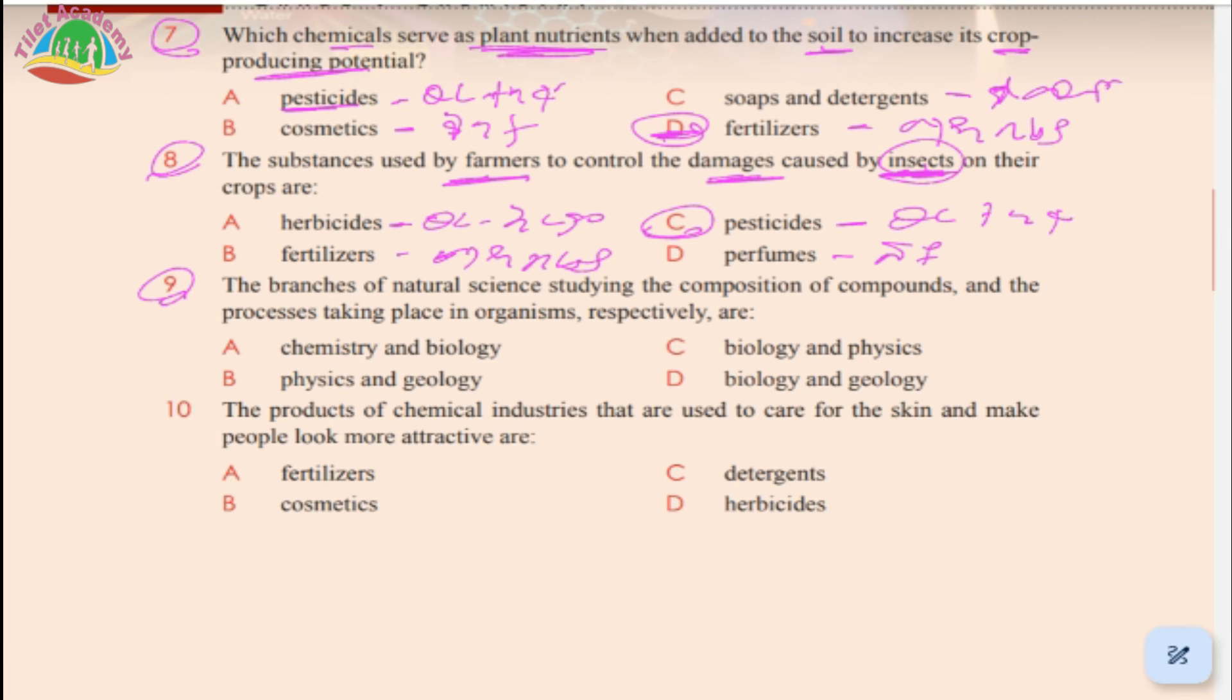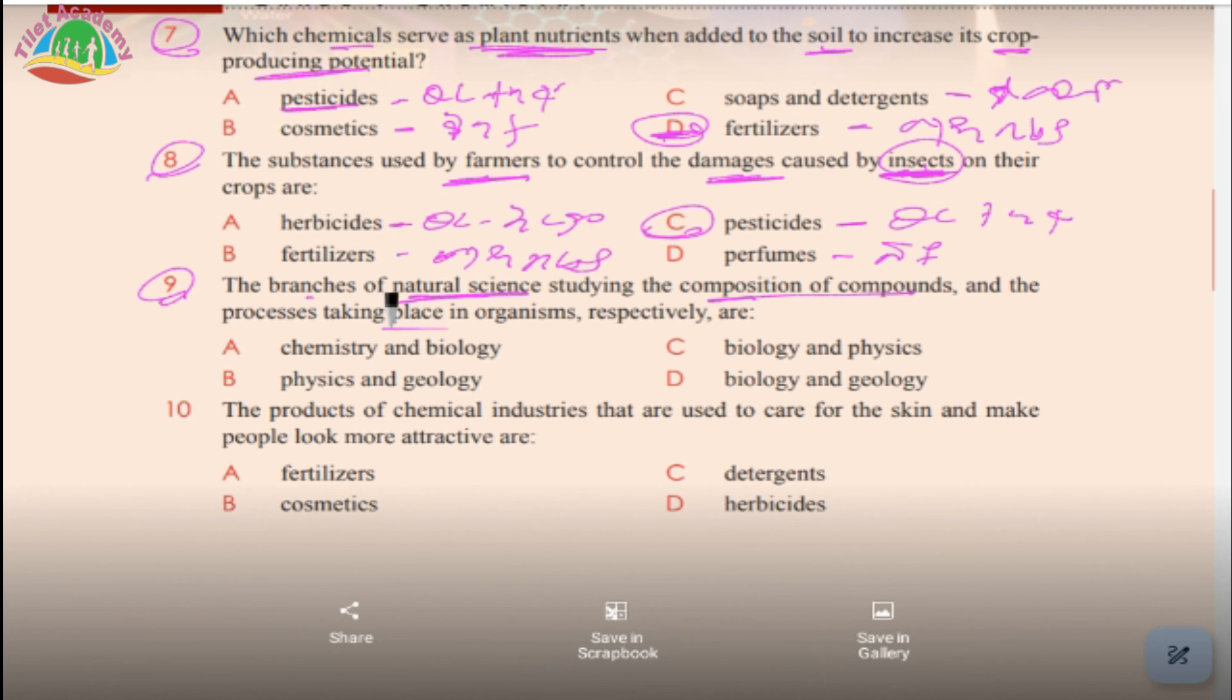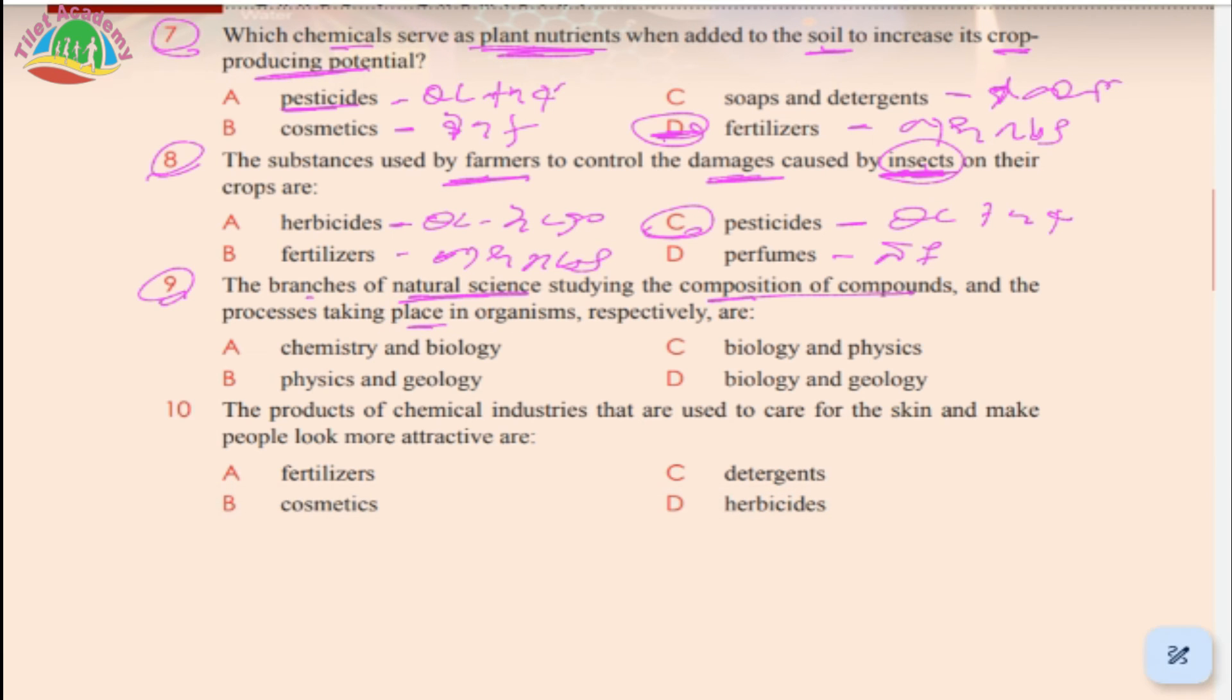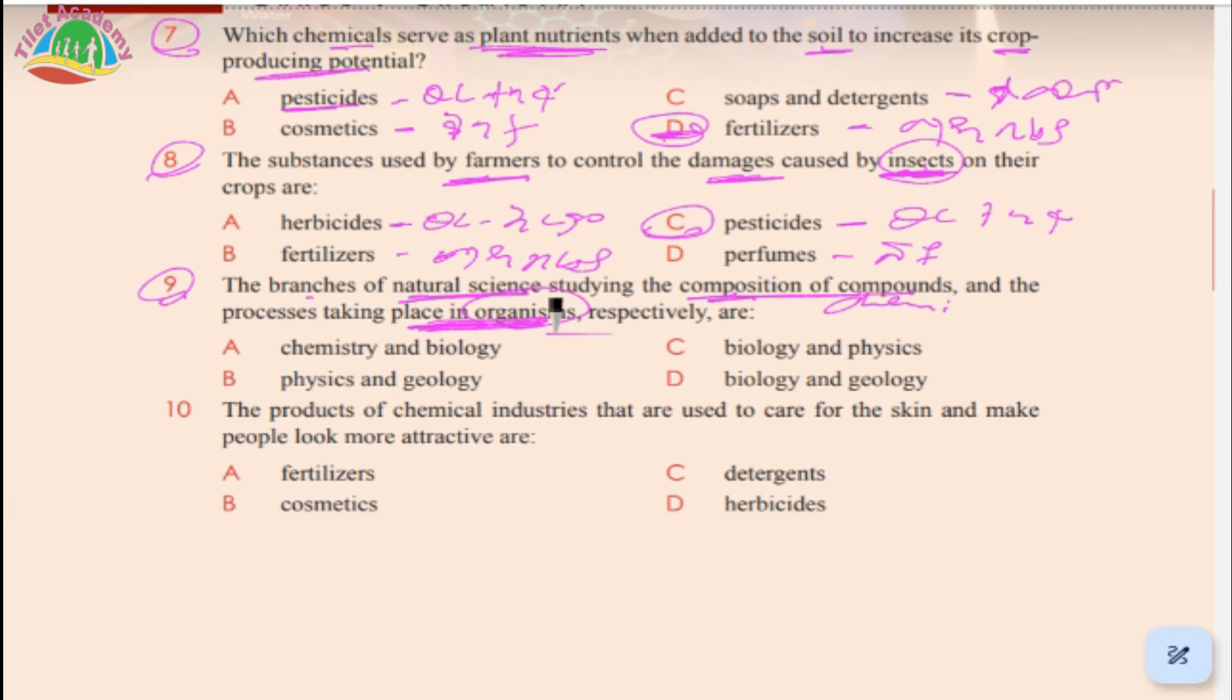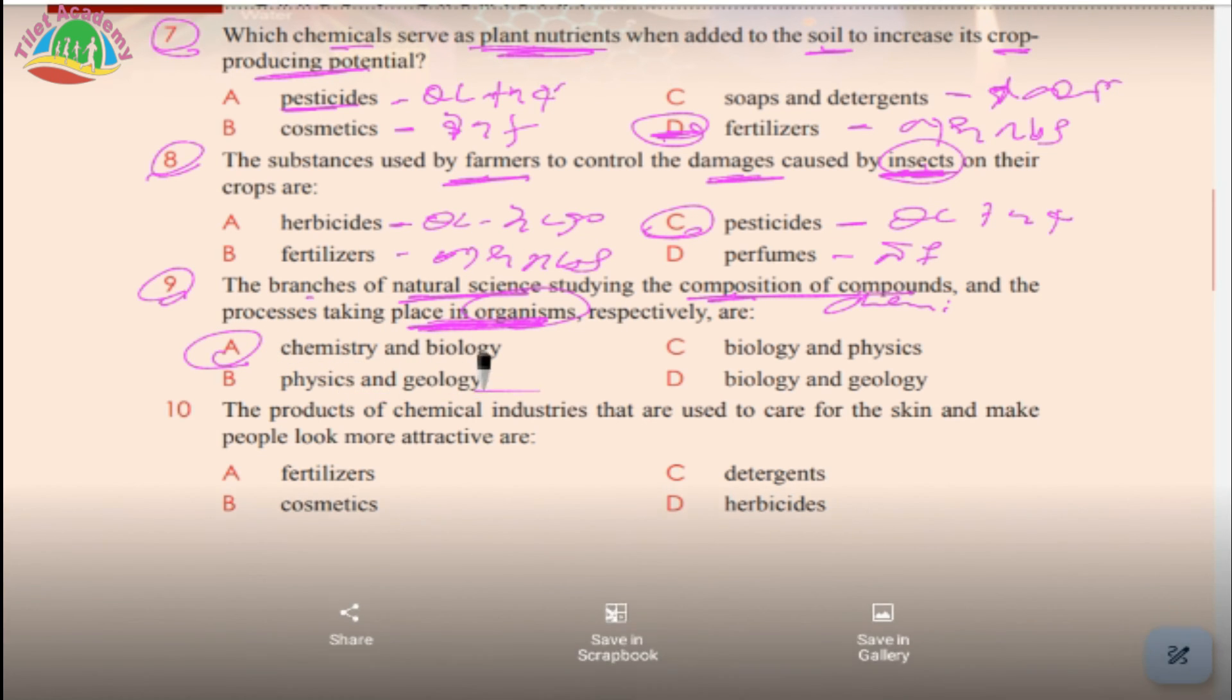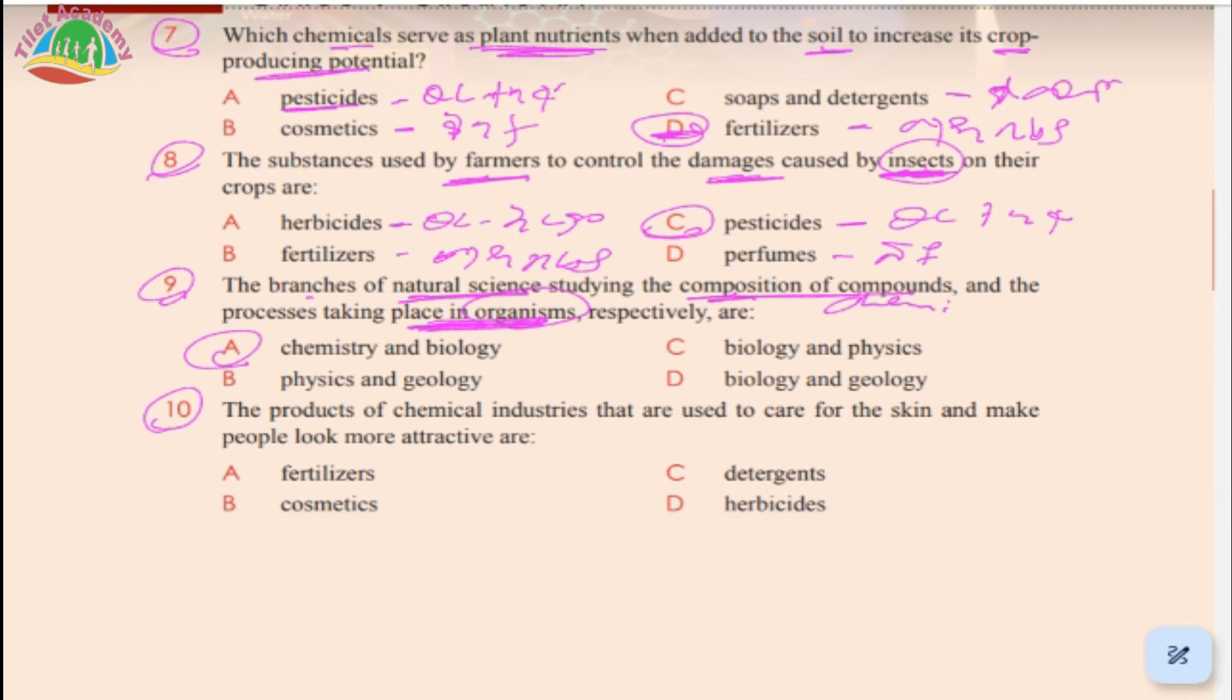The branch of natural science studying the composition of compounds and processes taking place in organisms. Composition of compounds is chemistry, and organisms is biology. So the answer is chemistry and biology.